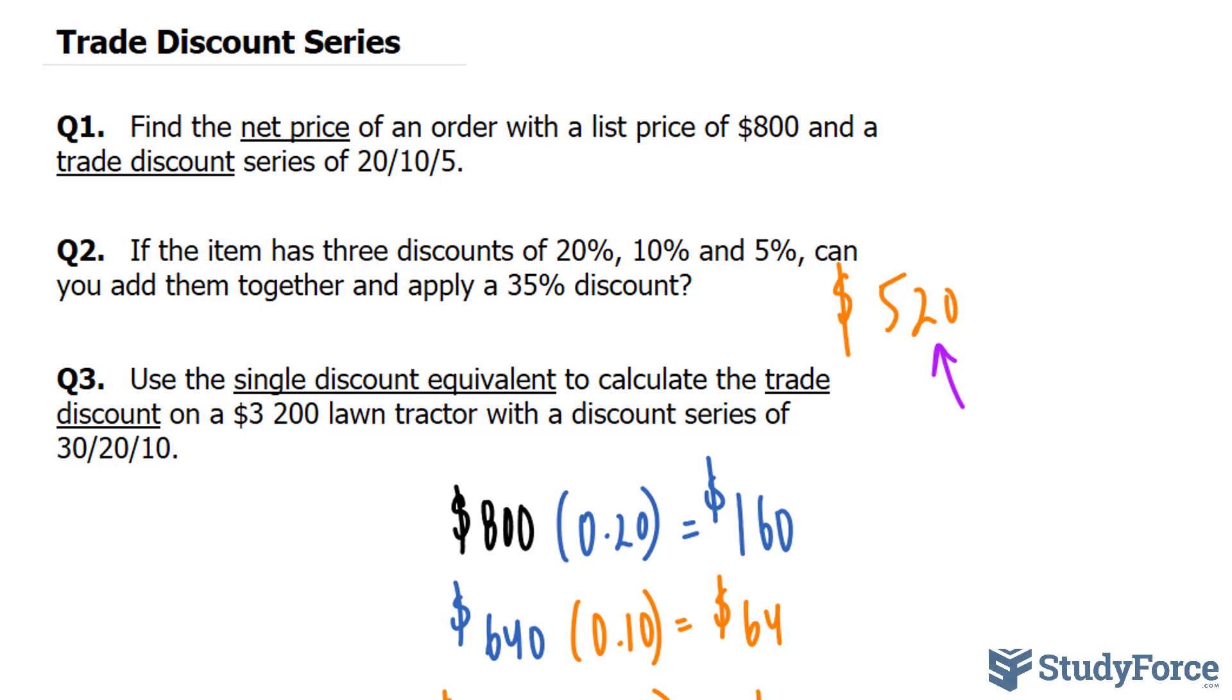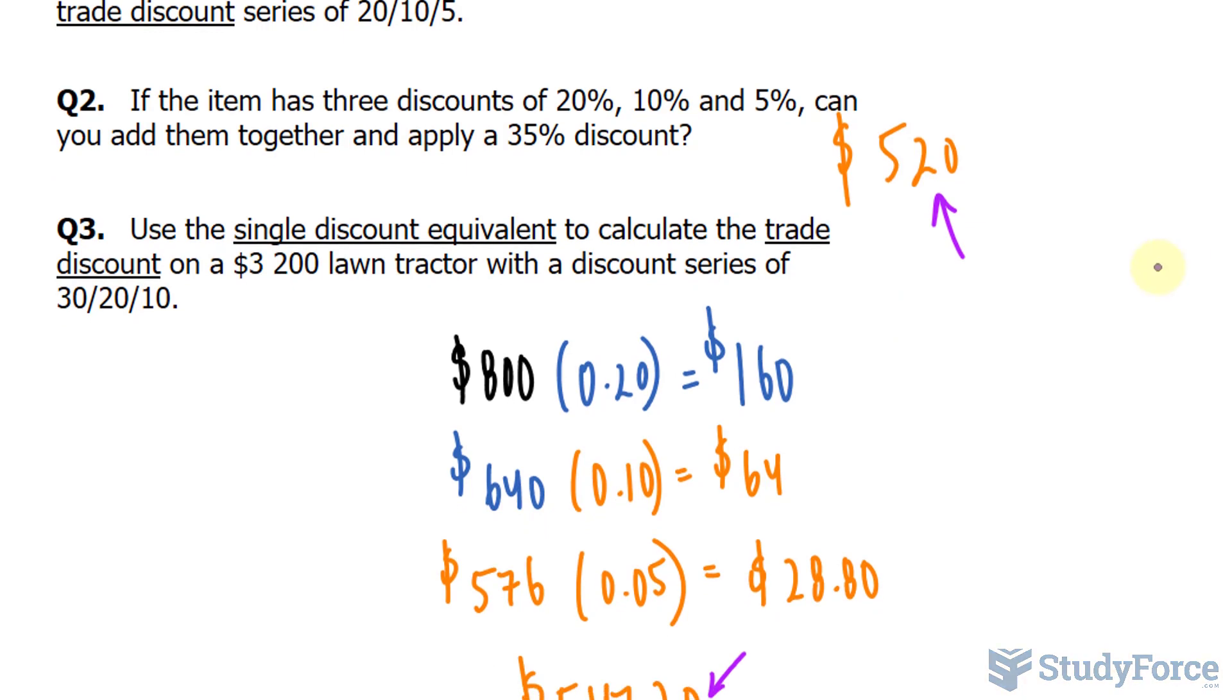Interestingly, rather than doing it in steps, you can find the complement of each of these percentages. So the complement of 30%, you take 100 minus 30. The complement of that is 70%, which as a decimal is 0.7. You do this for all three of the discounts.